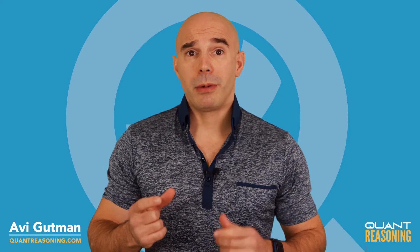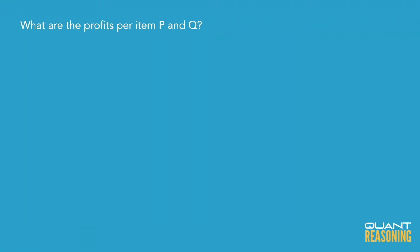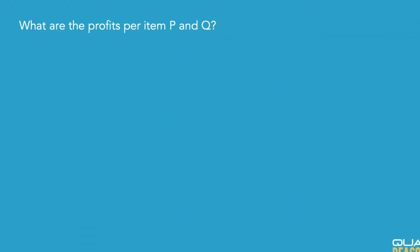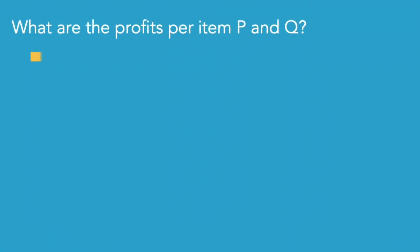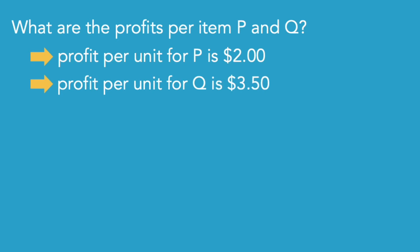The first thing we probably want to do as we're reading the question is see what are the actual profits per item for P and Q. If I quickly subtract the cost from the selling price, I find that the profit per unit for P is two dollars and the profit per unit for Q is three and a half dollars.